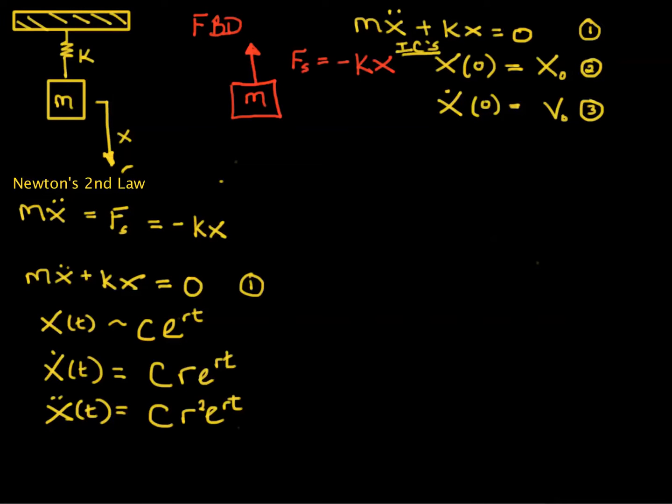So moving forward, we substitute, let's call this equation four and equation five. If we substitute four and five into equation one, we then get m r squared C e to the rt plus k C e to the rt is equal to zero.